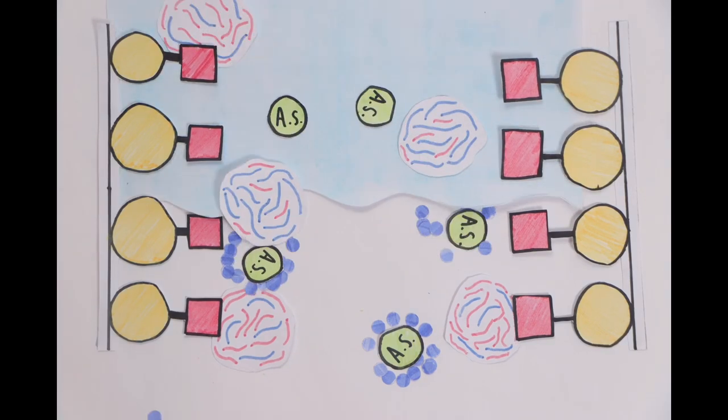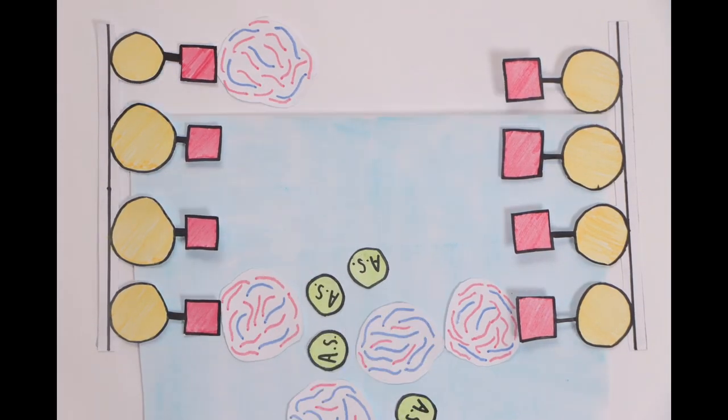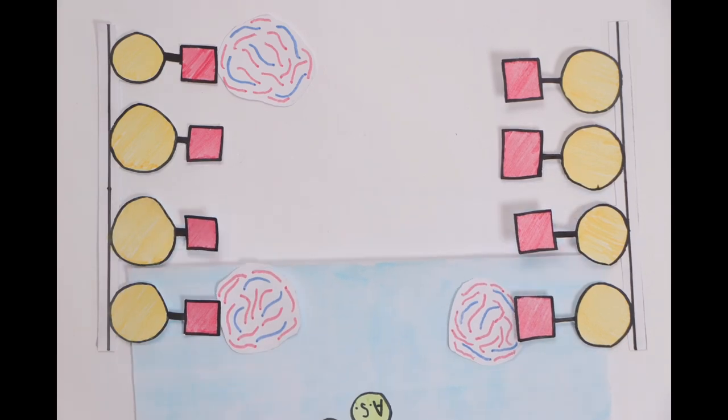A washing buffer is then used to wash out the unbound proteins, weakly bound proteins, and the ammonium sulfate salt.